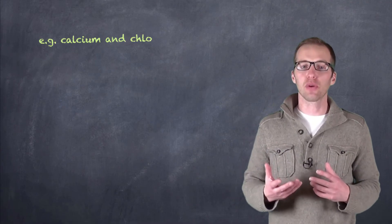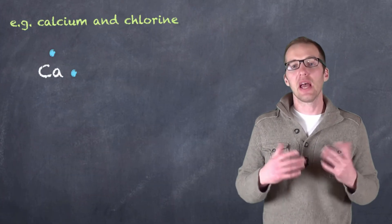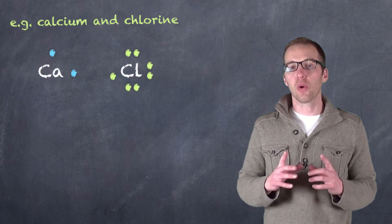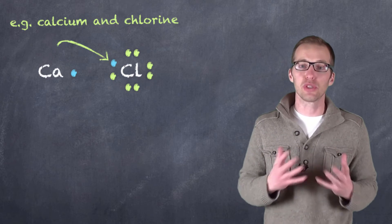So let's say we have calcium bonding with chlorine. Well, calcium being group two is going to have two valence electrons around it, and chlorine being group seven is going to have seven valence electrons around it. So each chlorine needs to gain one electron. But if you notice, calcium has two to donate.